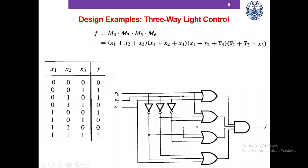This is the product of sum expression — again, we cannot apply Boolean algebra to reduce it further. For the POS implementation we take the max terms corresponding to rows where the function output is 0: M0, M3, M5, and M6. Computing the cost: 4 gates with inputs counting to 19 gives total cost 27. So SOP and POS for 3-way light control have the exact same cost.